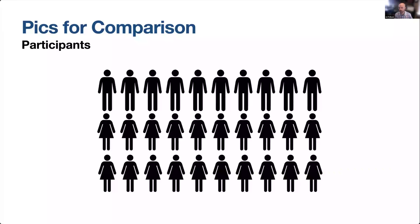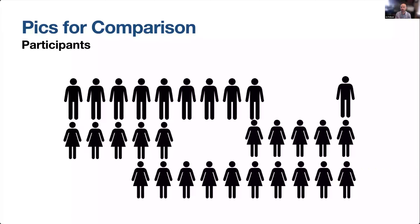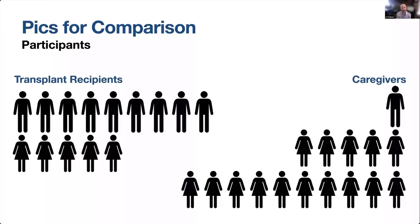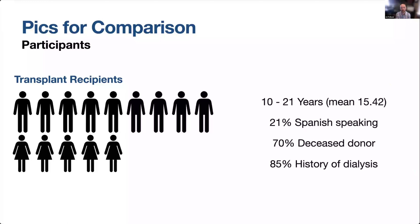We were able to recruit 30 individuals spread across four different cohorts — 14 transplant recipients and 16 caregivers. The transplant recipients ranged in age between 10 and 21 years. 21% were Spanish-speaking, which was more than double our typical Spanish-speaking population. 70% had a deceased donor transplant and 85% had a prior history of dialysis, which I think is important context for the results I'm about to share.